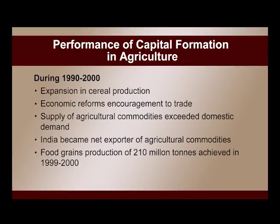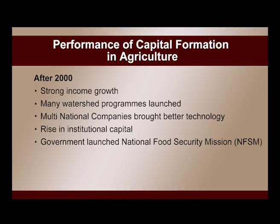Encouragement for export and supply of agricultural commodities exceeded domestic demand, making India a net exporter of agricultural commodities. Food grain production of 210 million tonnes was achieved in 1999-2000. During 2000 to the present, there has been strong income growth, many watershed programs were launched by the government, MNCs brought better technology increasing production of agricultural commodities, and there was a rise in institutional capital.